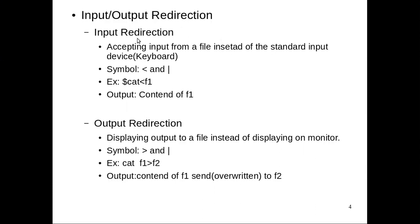The first type is input redirection. Input redirection means we are going to accept the input from a file instead of accepting from the keyboard, that is your standard input device. For that we are using two input redirection symbols: the less-than symbol and the pipe symbol. First let's see the working of the less-than symbol. The command is cat less-than f1. Here the cat command is used to display the content of file f1, and the input to the cat command is the file f1, not from the keyboard.